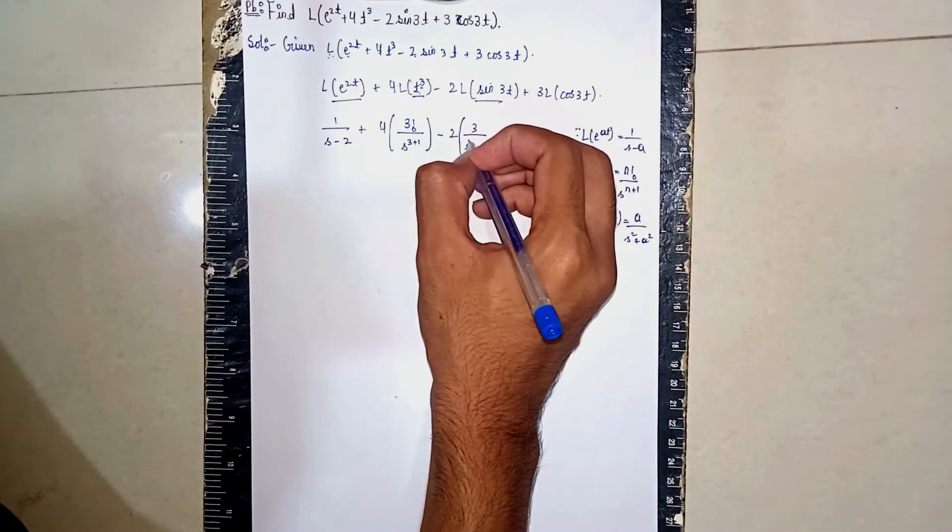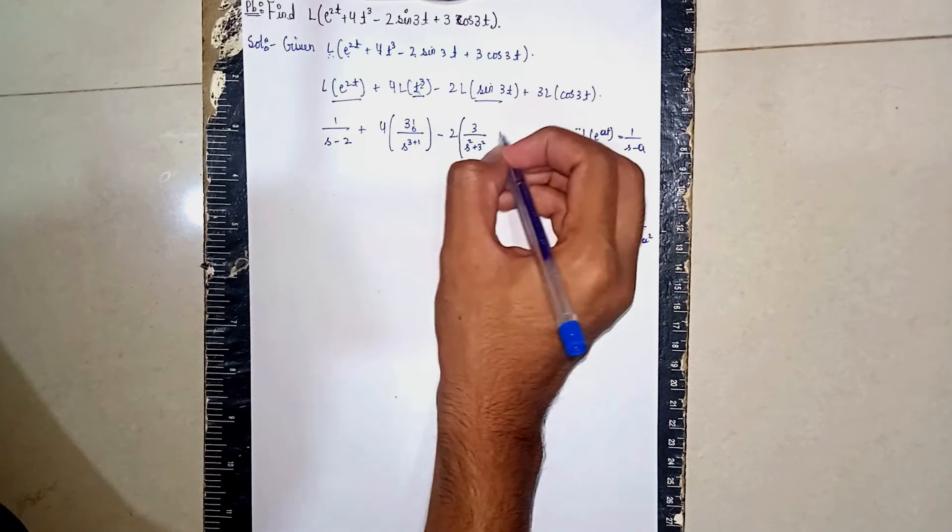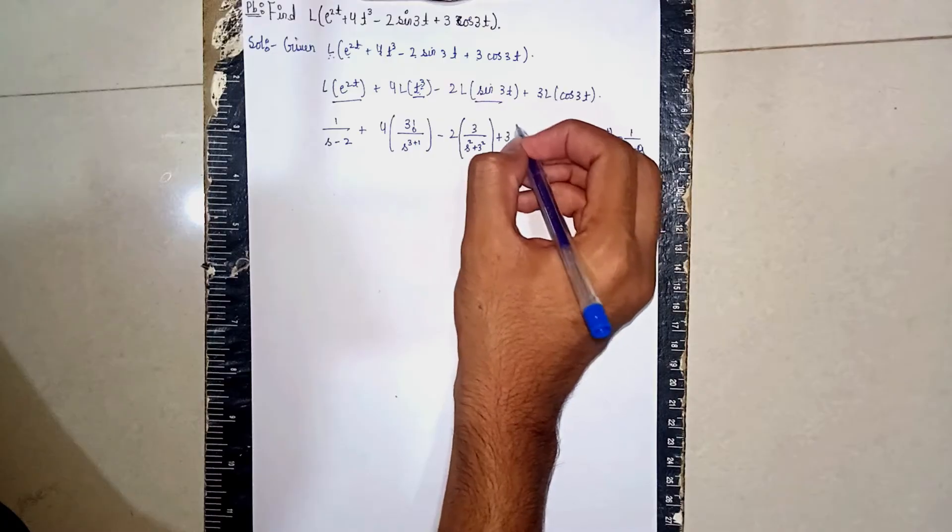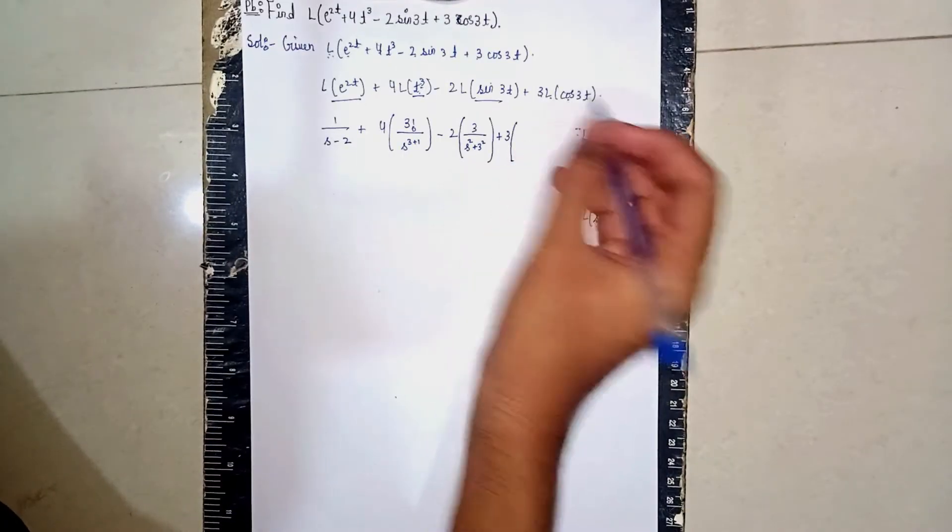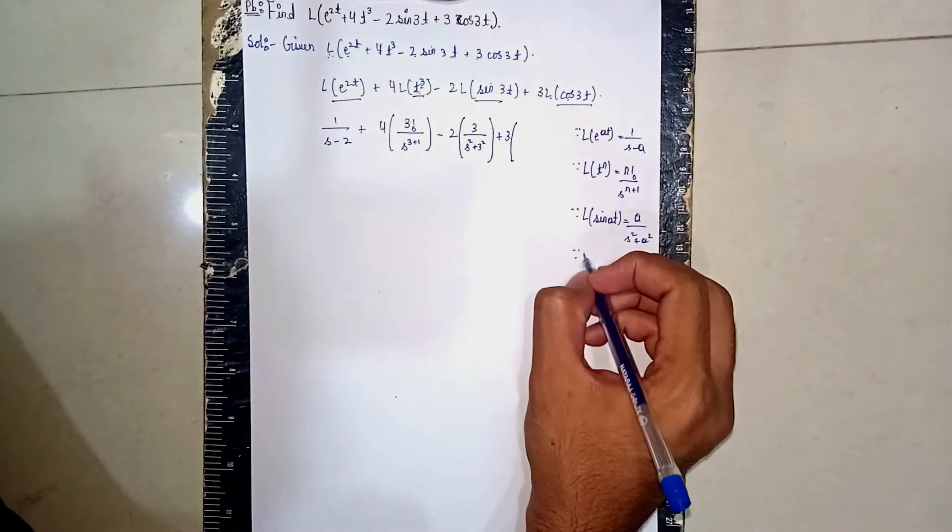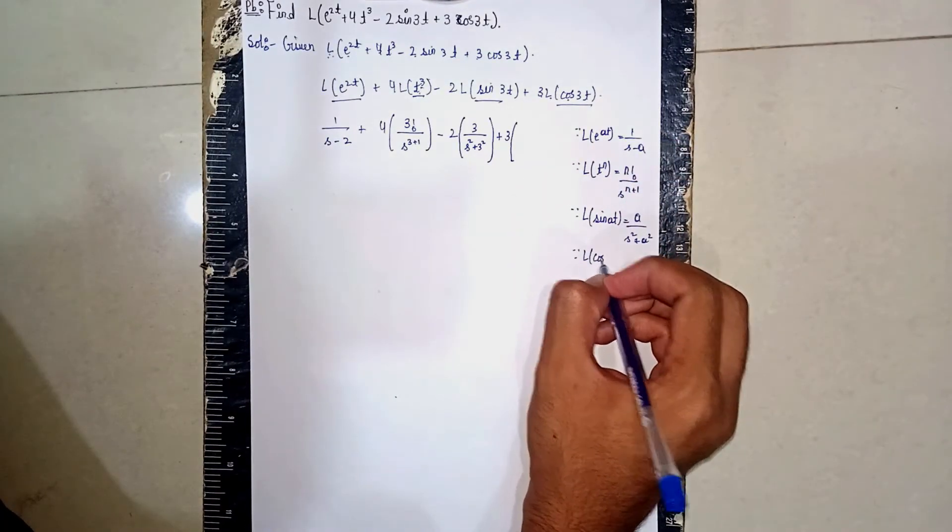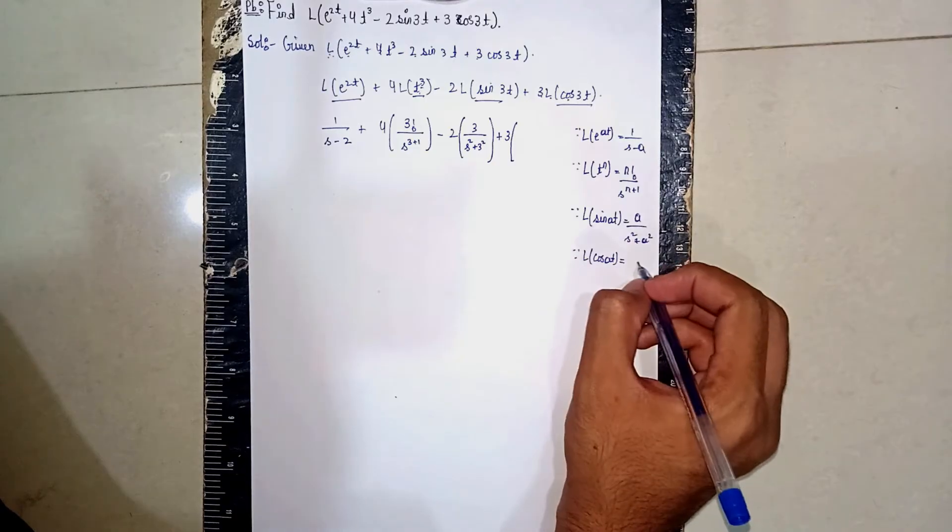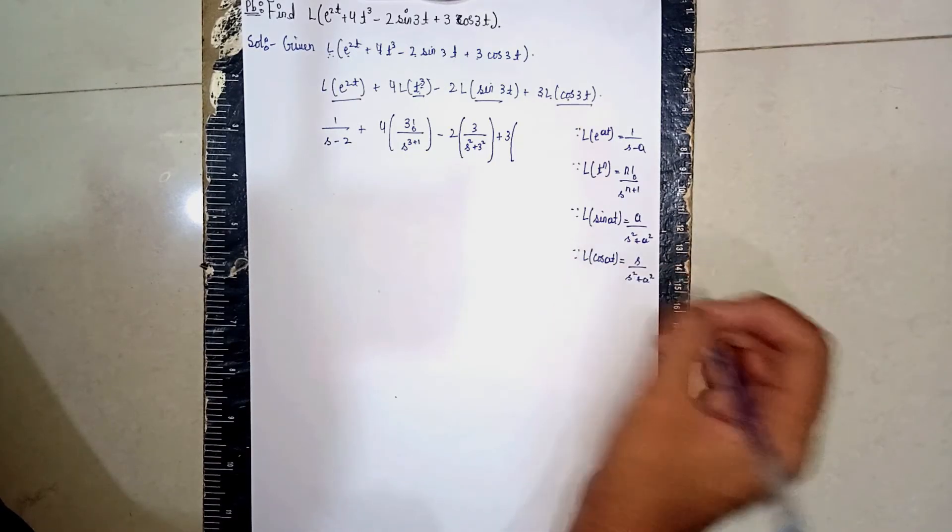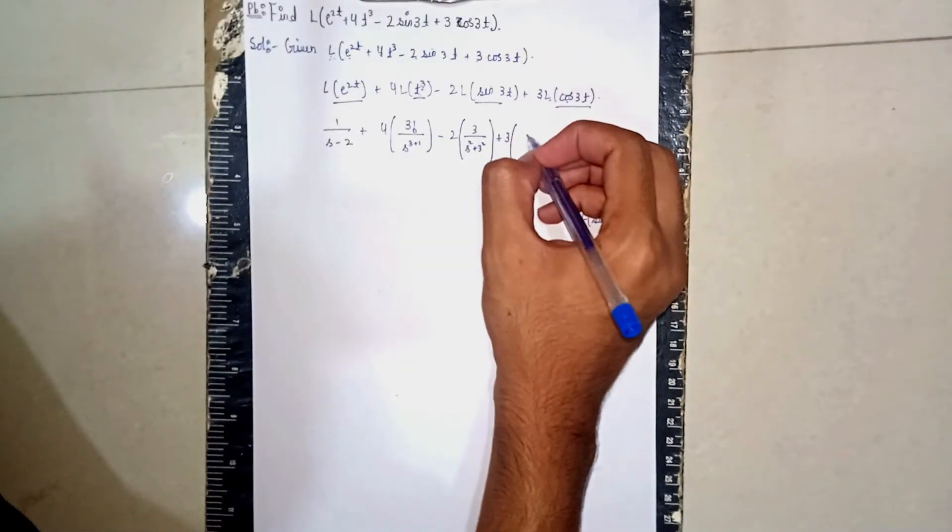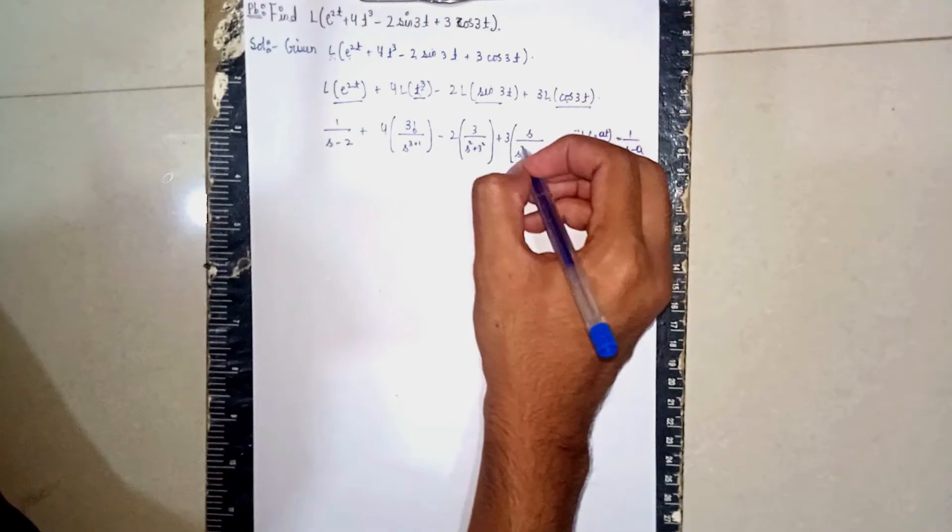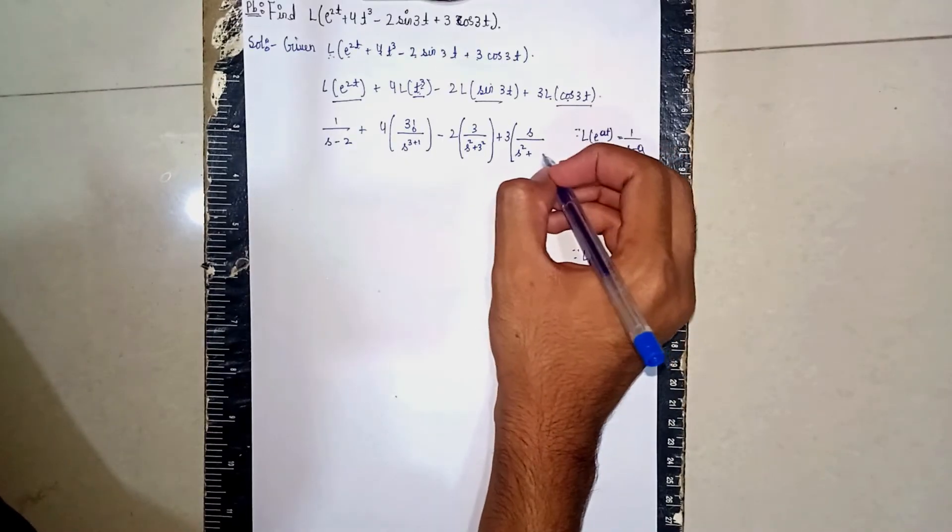Then plus here 3 outside, then apply the Laplace of cos(3t). The formula I'm using: Laplace of cos(at) is equal to s/(s^2 + a^2). So s by s^2 plus a is 3, it should become a^2.